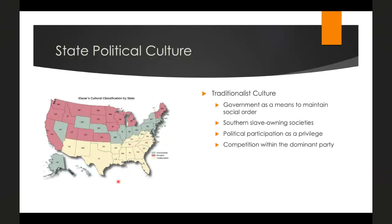Since this theory was published in 1966, many people have criticized the geographic determinism around Elazar's theory. They point to increased immigration from South and East Asia and Africa, which introduces new forms of political culture. People are also more mobile now — more likely to move from state to state. For example, the professor was raised in Virginia (traditionalist), went to graduate school in Chicago, Illinois (individualistic), and now lives in California (moralistic). This constant movement means there's much more flux and gradation between state political cultures than Elazar's original theory contends.